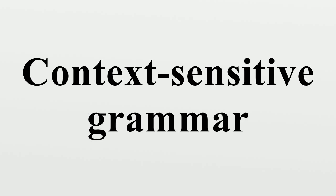A formal language that can be described by a context-sensitive grammar, or equivalently by a non-contracting grammar or a linear-bounded automaton, is called a context-sensitive language. Some textbooks define CSG as non-contracting, although this is not how Noam Chomsky defined it in 1959. This choice of definition makes no difference in terms of the languages generated, but it does make a difference in terms of what grammars are structurally considered context-sensitive. This issue was analyzed by Chomsky in 1963.